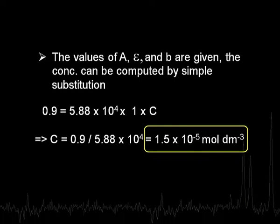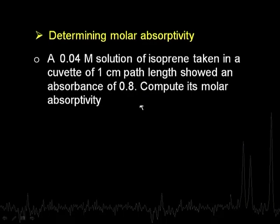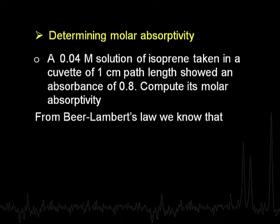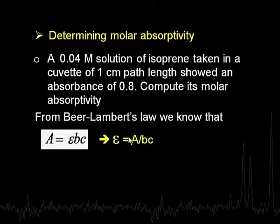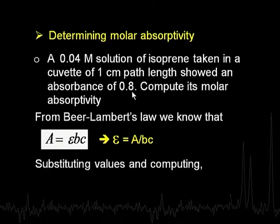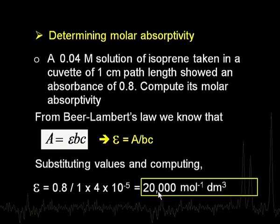Conversely, if concentration is known, we can find the molar absorptivity. For example, a 0.04 molar solution of isoprene in a 1 centimeter cuvette shows an absorbance of 0.8. Compute its molar absorptivity. Rearranging A = εBC gives ε = A/(BC). Substituting: absorbance = 0.8, B = 1 cm, C = 0.04 mol dm⁻³, we get ε = 20,000 mol⁻¹ dm³ cm⁻¹. These are simple but important applications of Beer-Lambert law.